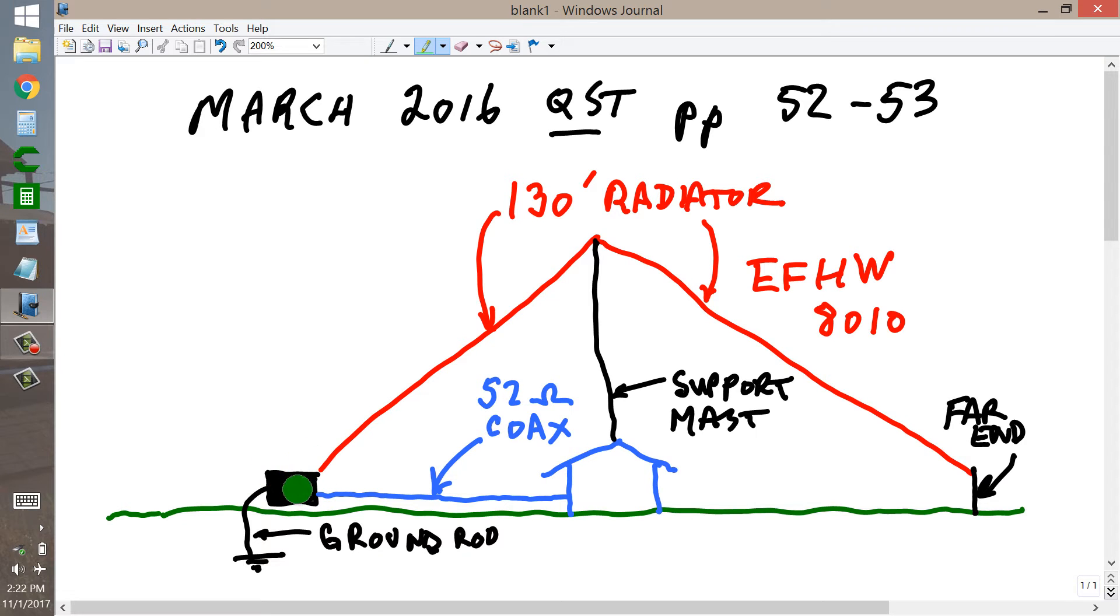And here is the box. What it basically is, is an un-un, an unbalanced to unbalanced transformer. And that's really all it is. It has two terminals at the end, one for the antenna, which is supplied, number 18 gauge, 130 feet of wire.